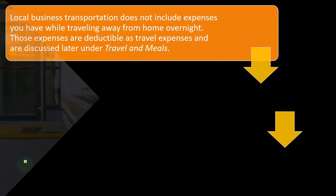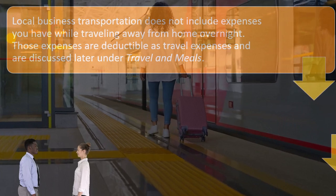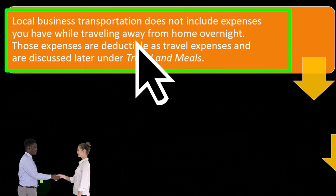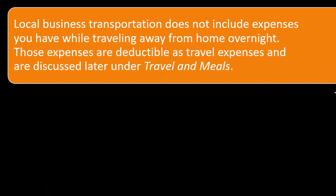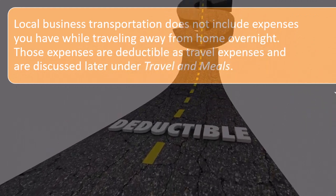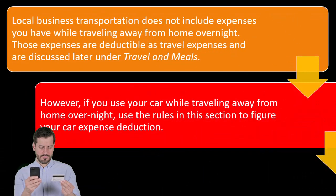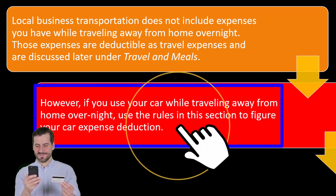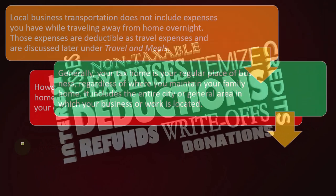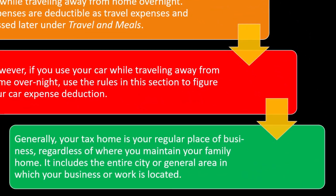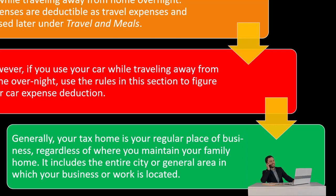Local business transportation does not include expenses while traveling away from home overnight — those expenses are deductible as travel expenses and are discussed later under travel and meals. However, if you use your car while traveling away from home overnight, use the rules in this section to figure your car expense deduction. Generally, your tax home is your regular place of business, regardless of whether you maintain your family home, and it includes the entire city or general area in which your business or work is located.